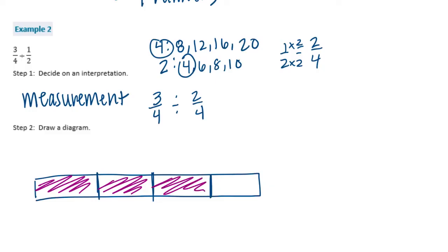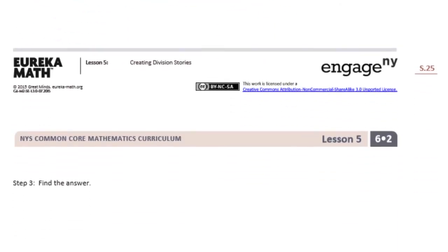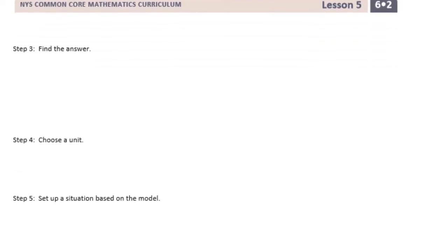Now I'm going to split it into groups of 2 fourths. So there's 1, 2, but this has 1 out of the 2 shaded. So it would be equal to 1 and 1 half. Step 3, find the answer. It was equal to 1 and 1 half.